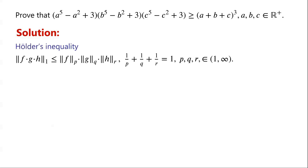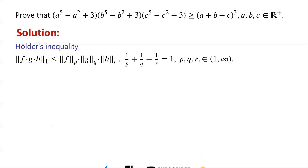Suppose P, Q, R belong to the open interval (1, infinity), and 1/P + 1/Q + 1/R = 1. Let F belong to L^P space, G belong to L^Q space, and H belong to L^R space. By Hölder's inequality, we have the 1-norm of F·G·H is less than or equal to the P-norm of F, times the Q-norm of G, times the R-norm of H.